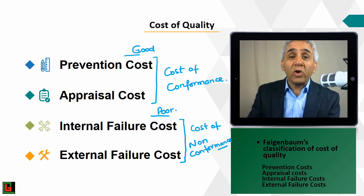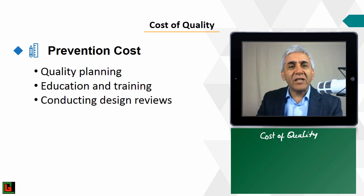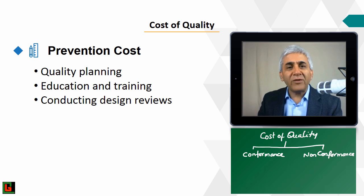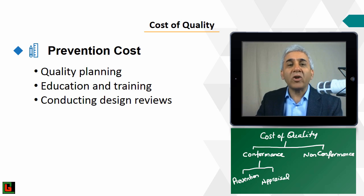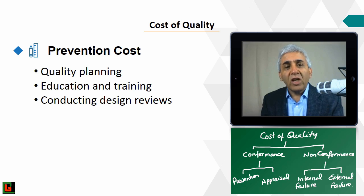Over the next four slides we'll go through each of these four categories. To recap: cost of quality divides into cost of conformance — further split into prevention and appraisal — and cost of non-conformance — further split into internal failure and external failure. Let's start with prevention cost.